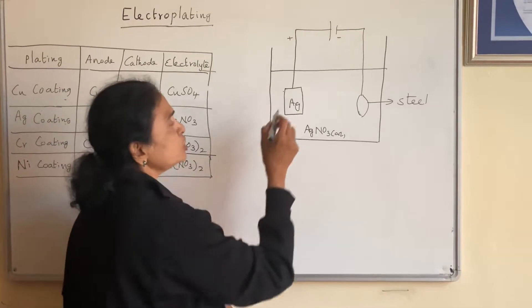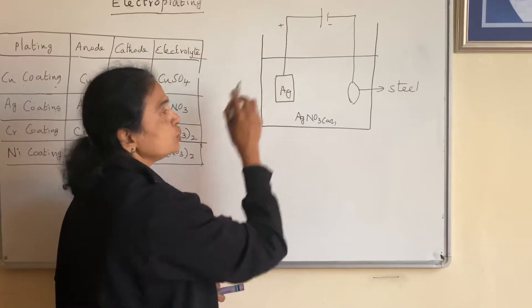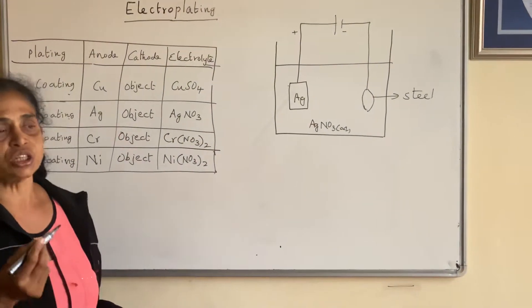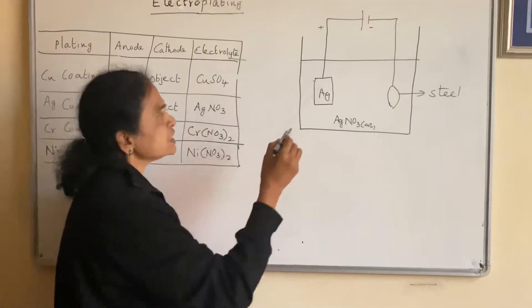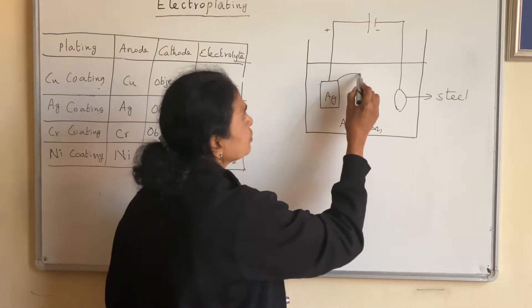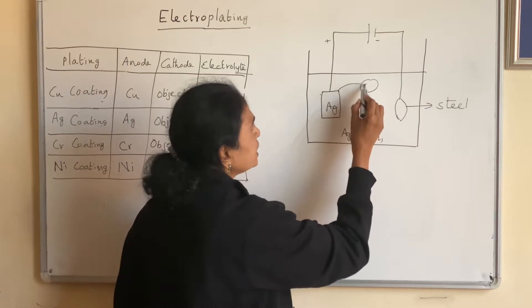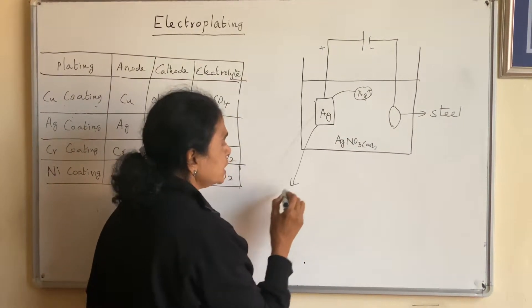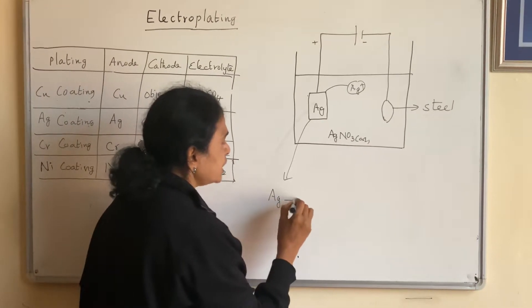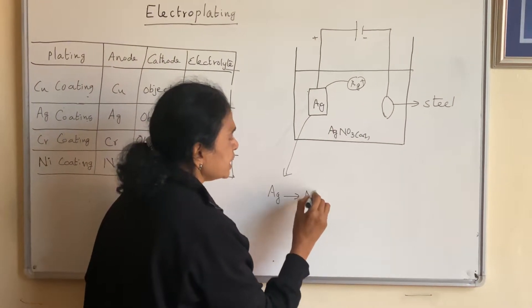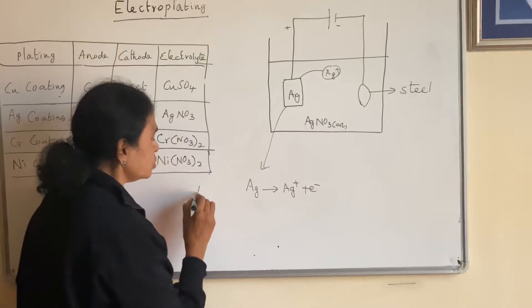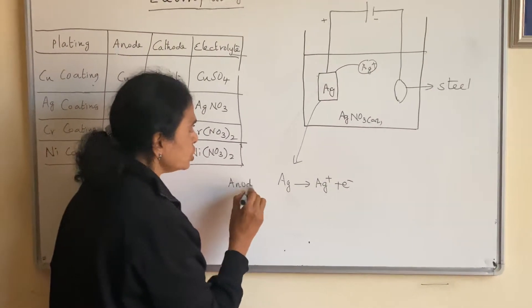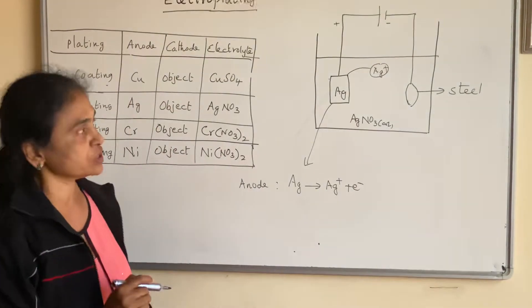So here you have got a spoon. The moment you start passing electricity, you already know oxidation takes place at anode. The silver will start coming out from this one and forms Ag+. So what is happening at anode is silver becomes Ag+ plus electron, which is called oxidation. Because electron is lost. Loss of electron is oxidation.